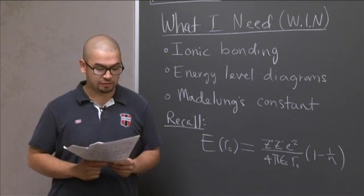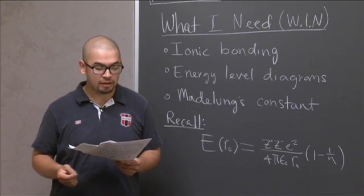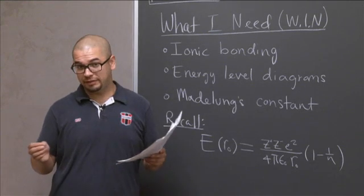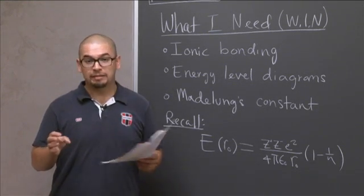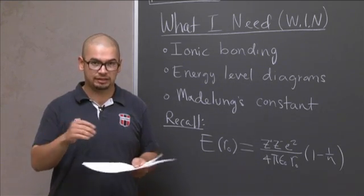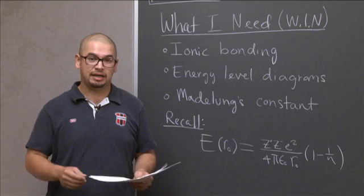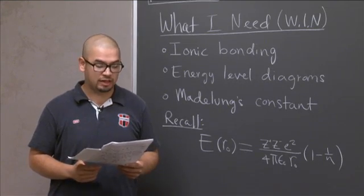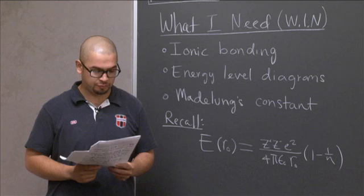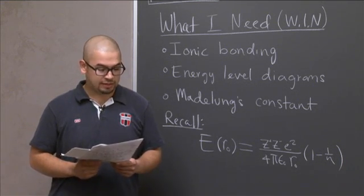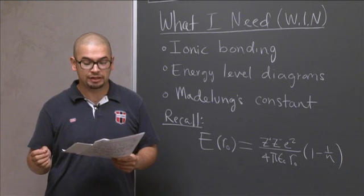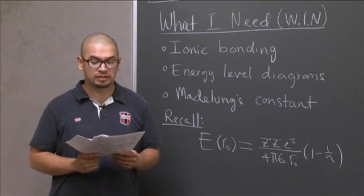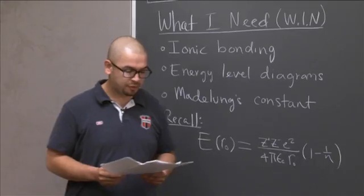So the problem reads as follows. For a given cation C and anion A, show the following four energy states on the same energy level diagram. One, ions at infinite separation. Two, an ion pair C and A, where C stands for cation and A stands for anion. Three, an ion line CACACA, it's just a repetitive line of ions and cations. And four, a crystalline solid of CA, so it's a three-dimensional crystal structure with C and A. And it says also that assume that the comparison is based upon identical numbers of ions in all four states. The diagram need not be drawn to scale. However, you must convey relative values of different energy states.